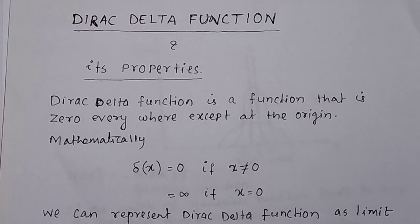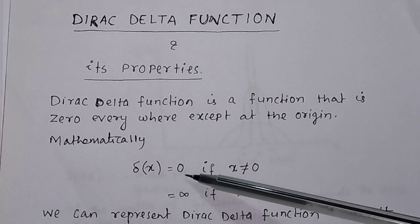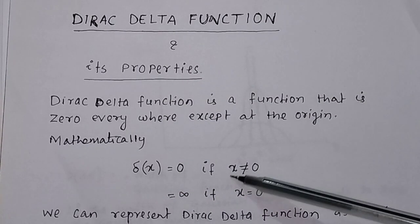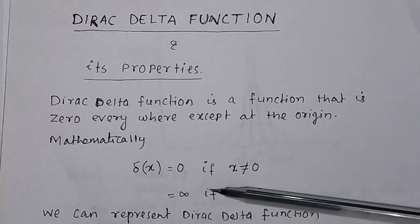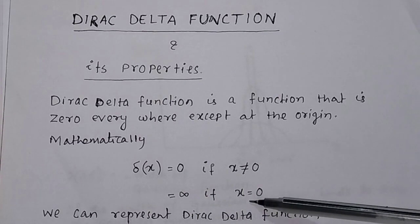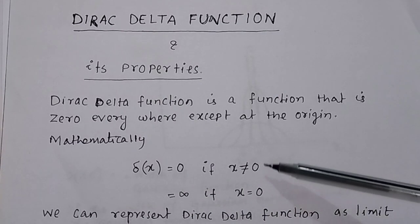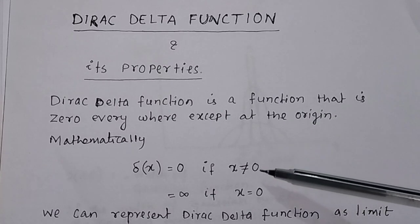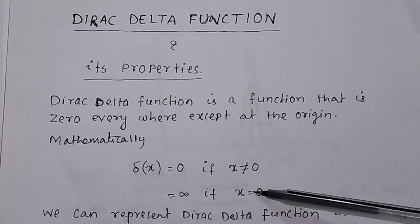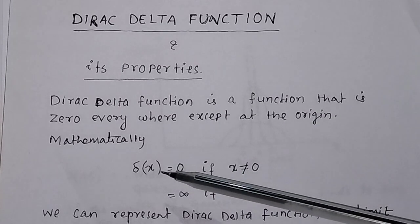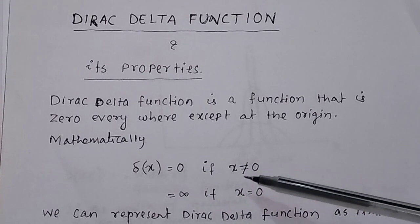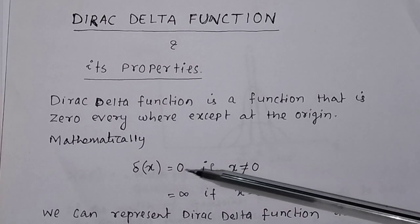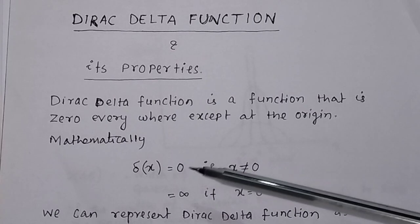Mathematically, we define the Dirac delta function as: δ(x) = 0 if x ≠ 0, and δ(x) = ∞ if x = 0. So the Dirac delta function is defined only at x = 0, where its value is very large, and at all other points it is equal to zero.